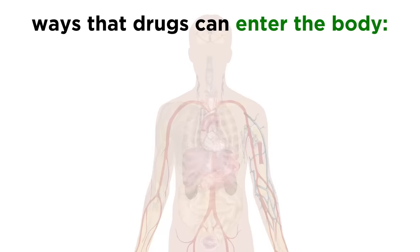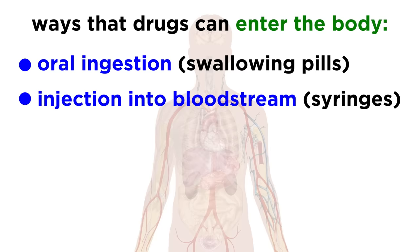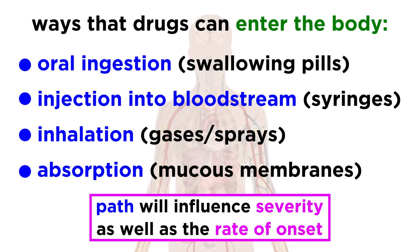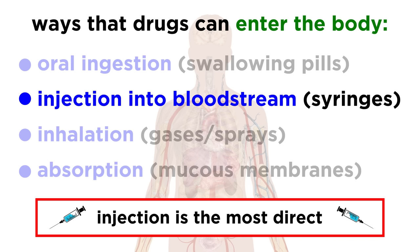Drugs enter the body in a few different ways. They can be ingested orally, like a pill, injected into the bloodstream, inhaled into the lungs, or absorbed through any of the external mucous membranes of the body. The path taken will impact the severity of the effect as well as the rate of its onset. The bloodstream is the most direct, and thus the fastest and most predictable, while the other methods eventually make it to the bloodstream after being absorbed into blood vessels from wherever they were administered.